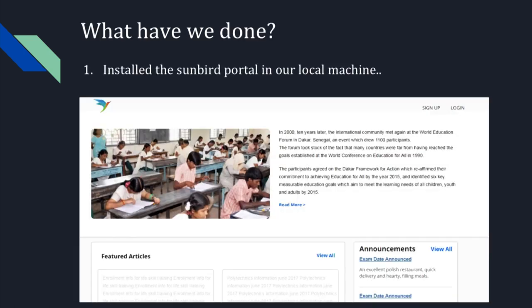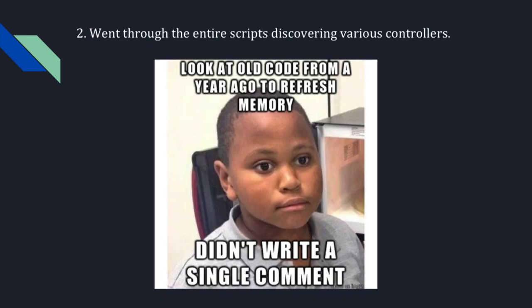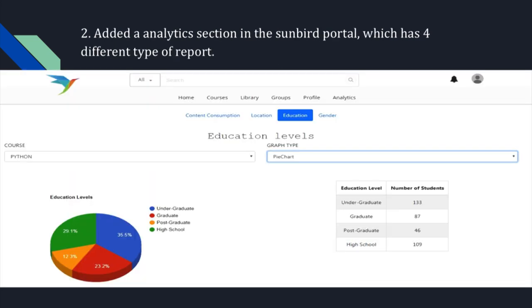We have successfully installed the Sunbird portal on our local machine. We faced some challenges in the beginning — just problems with the version of Node and the dependencies. We went through the entire scripts, and what was a nightmare was there were no comments in the code, so we had to figure out everything on our own. A mentor helped us a lot in this phase, and we successfully added an analytics section which generates four different kinds of reports: content consumption, location-wise course enrollment, gender-wise, and education-wise course enrollment.